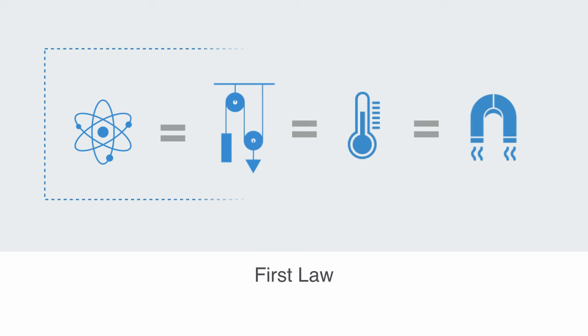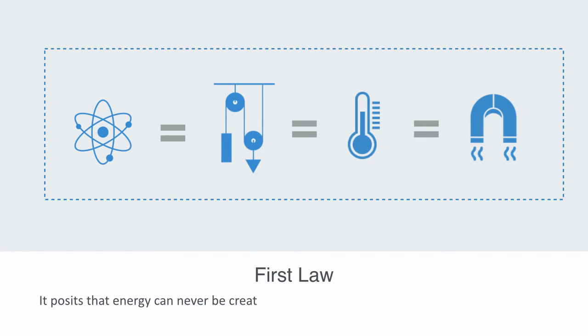The first law, in its generalized sense, is a statement of the conservation of energy and matter. It posits that energy can never be created or destroyed, but it can be transformed from one form into another. This implies that the total energy of an isolated system remains constant over time. The first law tells us about the flow of energy within a physical system and that we can trace this transformation from one form to another through the system.